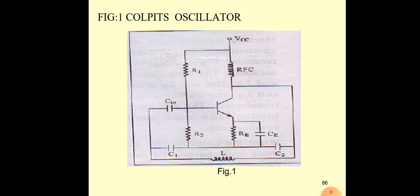The Colpitts oscillator performs a similar function to the Hartley oscillator. Instead of two inductors, it uses two capacitors in series parallel with one inductor. To remember: C stands for capacitor, so use two capacitors in series and a parallel inductor. The Colpitts oscillator maintains better stability compared to the Hartley oscillator. The circuit is simpler, costs less, and losses are also lower.